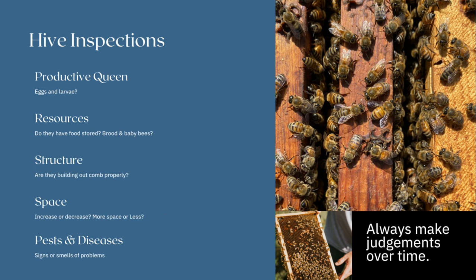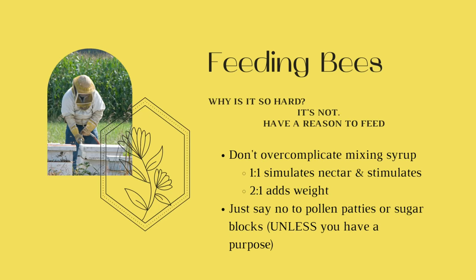As you begin to do your full hive inspections — mostly in the spring, summer, and early fall — here are the main things to look out for: Are there eggs and larvae showing you've got a productive queen? If not, is she not laying because of the weather or lack of space? Do the bees have enough food stored for the time of year? Do they have the expected amount of brood and bees? Are the bees building out comb and do they have enough space? Are they increasing or decreasing their brood nest and population compared to the current season? What signs or smells indicate pests and diseases, and should something be done? You can then make assessments on whether your hive needs medication or additional nutrition to help them overcome their situation.